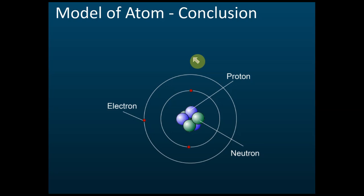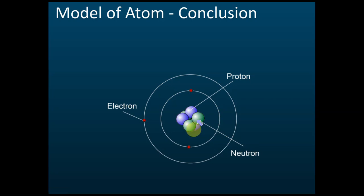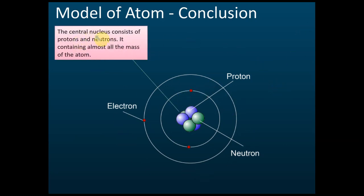So the conclusions from all previous scientists: we follow James Chadwick's model. Inside an atom there are three subatomic particles — proton, neutron, and electron. Neutrons and protons are located in the center, called the nucleus. Electrons move around in certain orbits, called electron shells. This is the model of the atom we will use in SPM. The central nucleus consists of protons and neutrons and contains almost all of the mass.